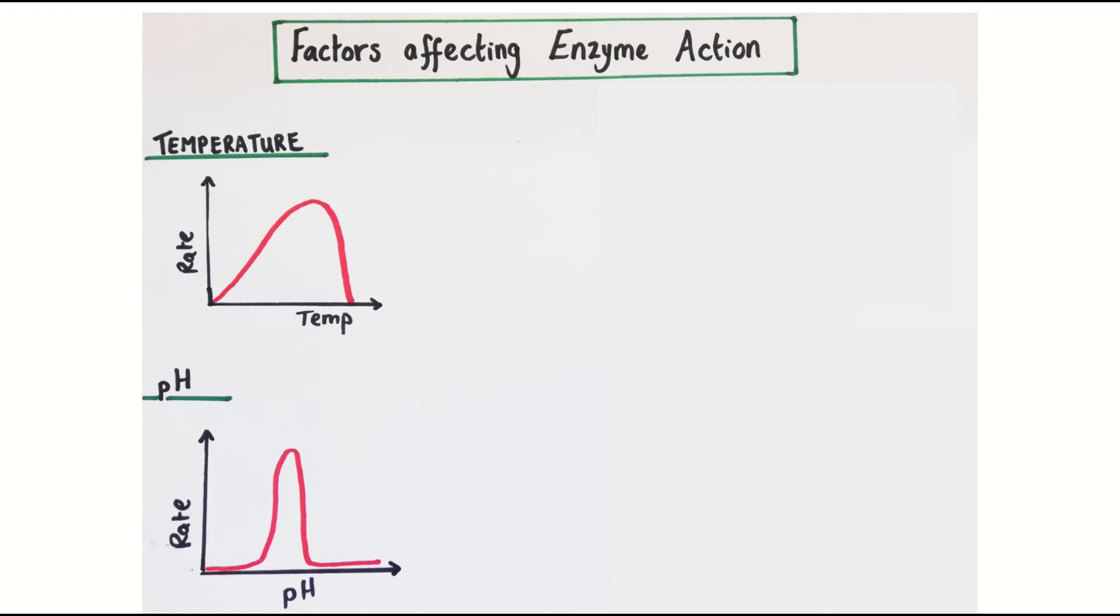Enzymes are very sensitive to pH. Every enzyme will have a very narrow range of optimum pH. Outside of this range, the enzyme quickly becomes denatured. Most enzymes have an optimum pH of around 7, which is neutral, but the enzymes in our stomach work best at a very acidic pH too.